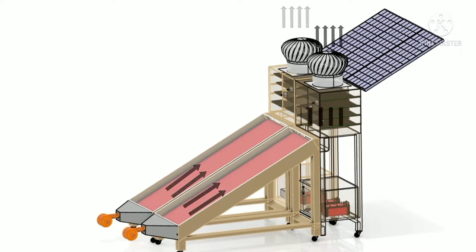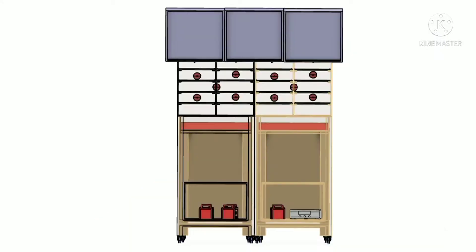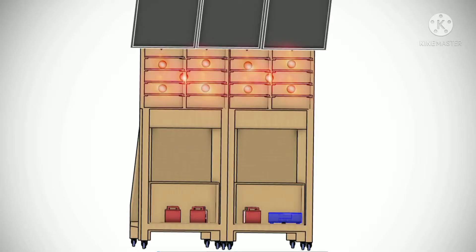After sunset, the PCM material releases its heat energy to storage chambers. This hot air is blown to the storage chamber with blowers. IR bulbs are used to dry the products by emitting heat at night time in the absence of sun.